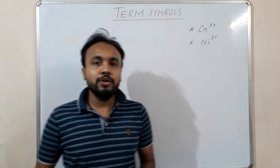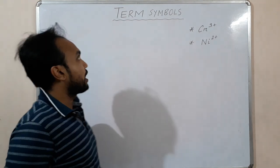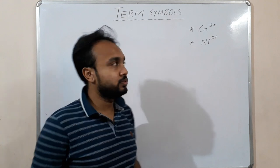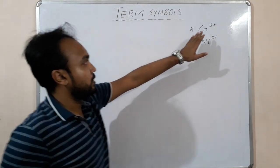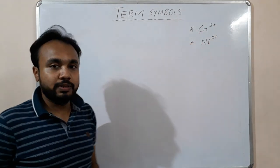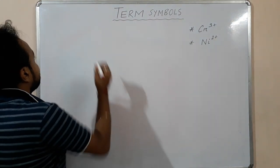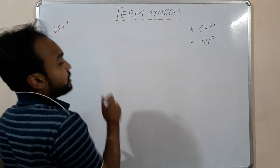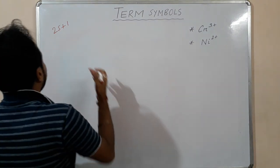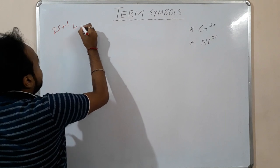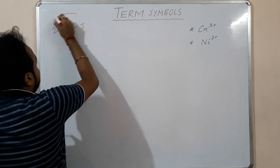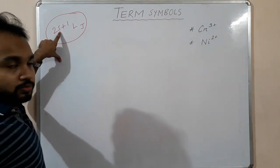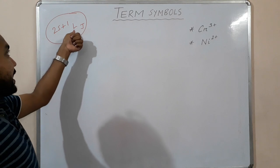Good morning friends, today we are going to discuss the ground state term symbols of two transition metal ions: the chromium 3+ system and the nickel 2+ system. We have to remember this formula: 2S+1 L J. First we have to find the S value, from which we get 2S+1, then the L value, and then the J value.